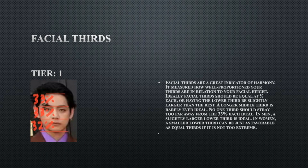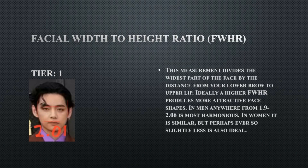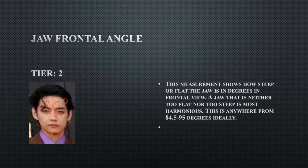His facial thirds are even — everything is pretty much at 33 percent, which is good. His canthal tilt is 4.5, almost close to the ideal range, so it's a tier 2 but not a flaw. His facial width-to-height ratio — how compact is the mid-face area from the eyebrows down to the upper lip relative to the cheekbones — should be close to 1.9 to 2.6, and it's at 2.01, which is ideal and perfect.